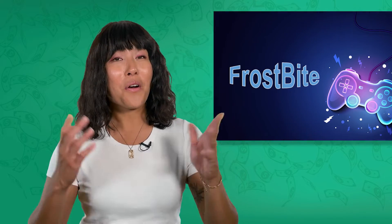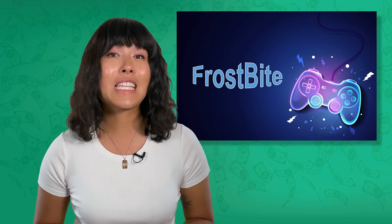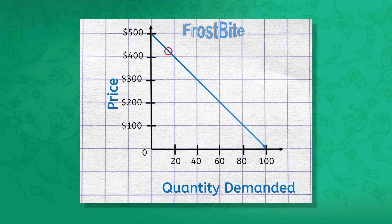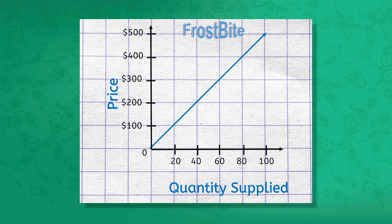Let's return to that video game console from the previous lesson, Frostbite. Imagine that they've just released version 3.0. Let's take a look at the demand curve for the new version. Note that the demand curve slopes downward as usual, meaning that the lower Frostbite prices their product, the higher the demand will be — this follows the law of demand. Now, what about supply? How much is the company willing to produce at each price? Take a look at their supply curve. Note that it slopes upward as usual, following the law of supply — the higher the price, the more Frostbite would be willing to produce and sell.